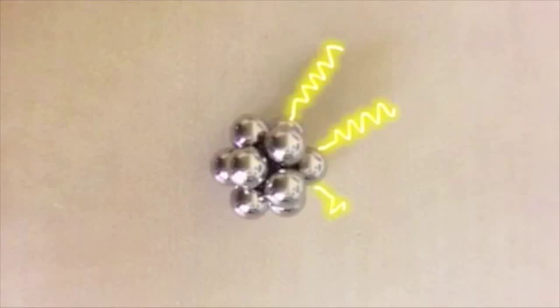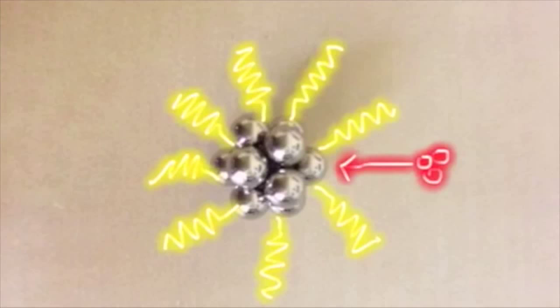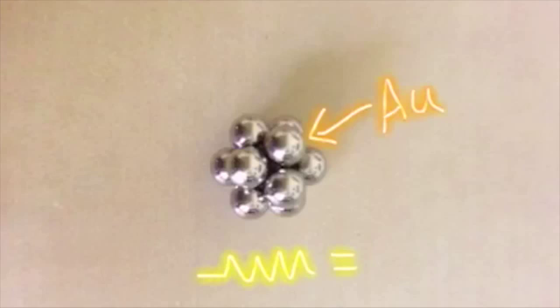For example, for gold nanoclusters, they are usually protected by thiol ligands. In order to observe precise chemical transformation at the nanoscale, one prerequisite is to have atomically precise nanoclusters as reactants, which means that in every nanocluster there are exactly the same number of atoms and surface ligands.